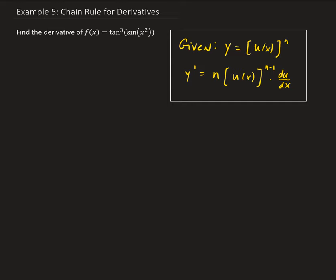So again, we have a composition here of four functions: x squared, the sine, the tangent, and then the power. So we're going to have to apply the general power rule multiple times here. The strategy is that we start with the outside power and then work our way towards the inside of the argument.